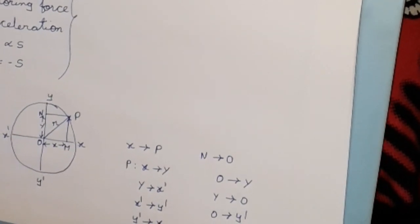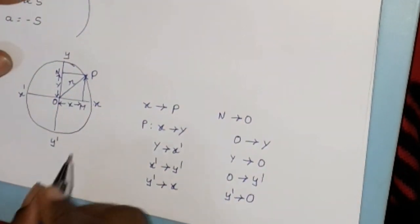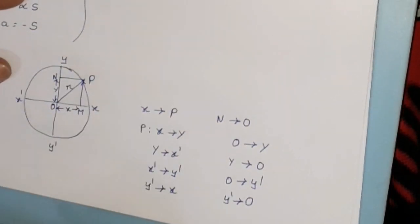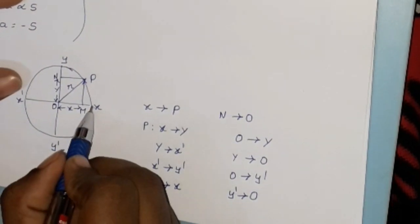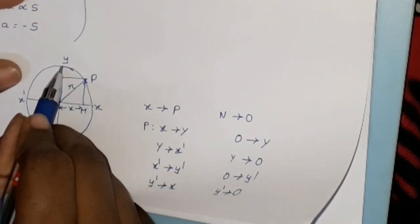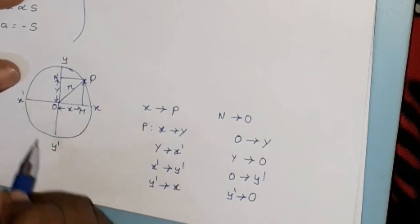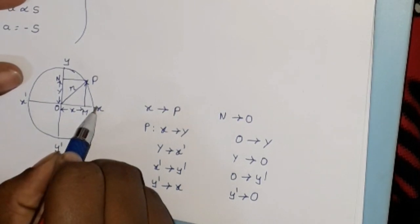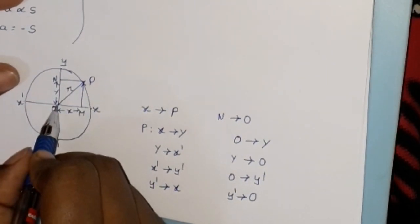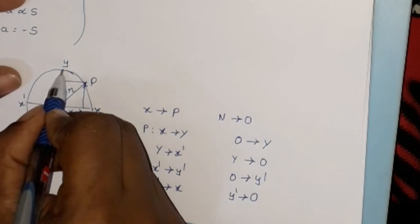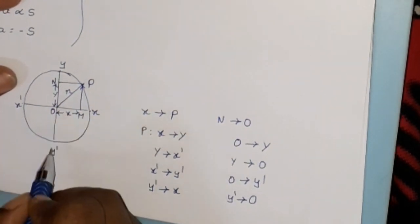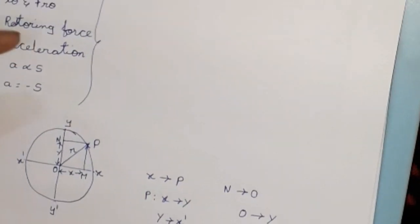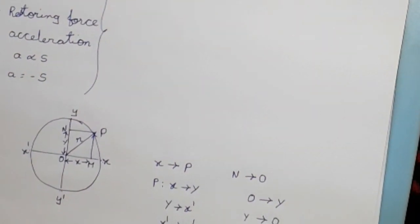If you consider a circle, a particle moving along the circle will produce an oscillation — the projection of circular motion gives simple harmonic oscillation.